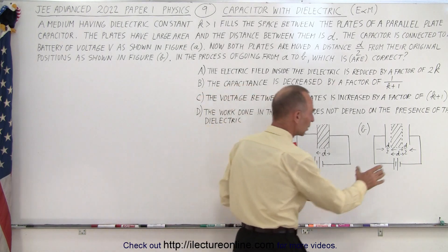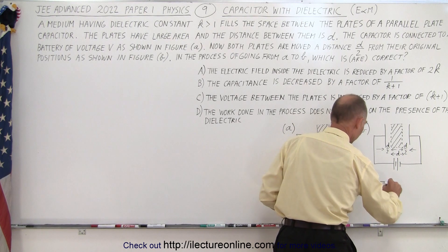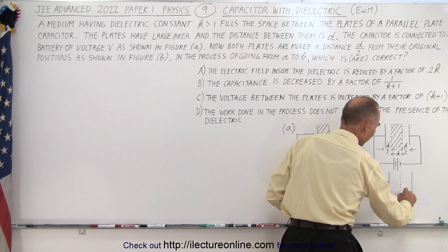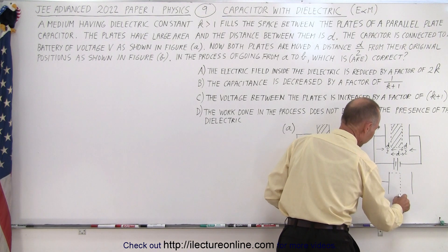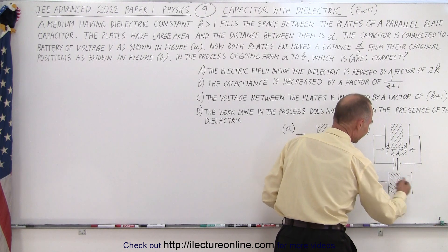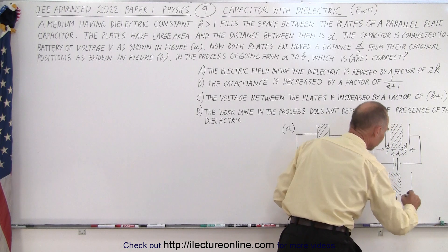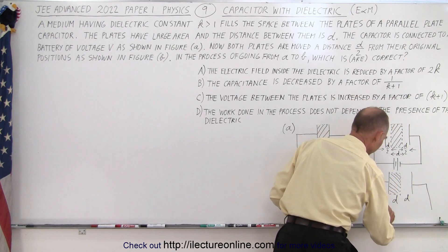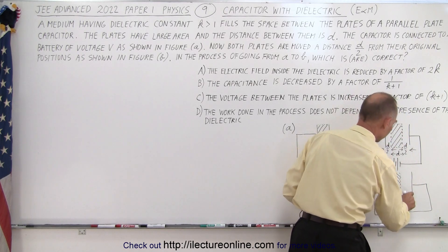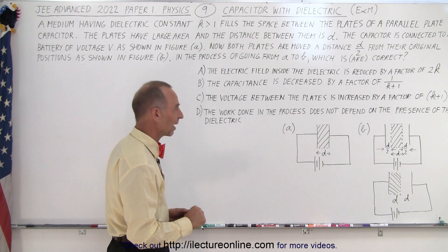We can represent this slightly differently and get the exact same capacitance — it makes it easier to deal with. We can simply move all of the dielectric to one side and have the other half of the space filled with just air. So that's exactly the same representation: we have a distance d for the dielectric and a distance d for the air, connected to the battery. This acts capacitance-wise exactly the same.